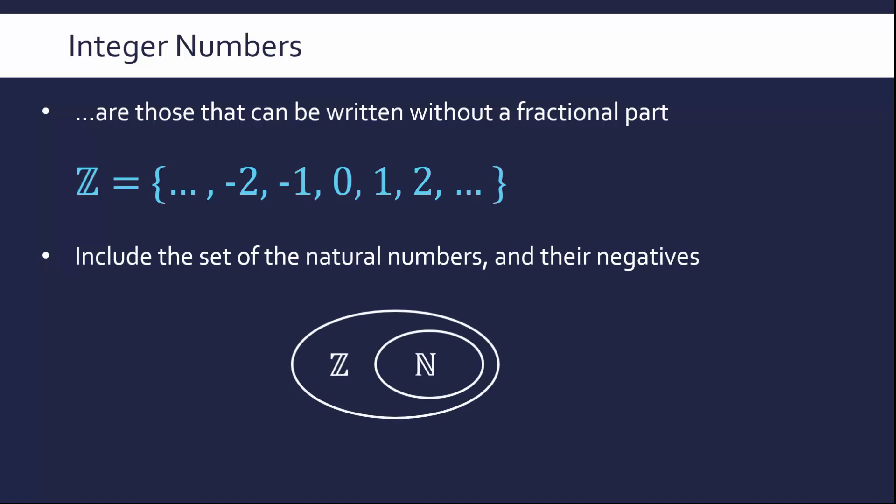If we want to represent it in a Venn diagram-ish representation, the integer numbers do encompass the natural numbers. Therefore, we can represent it with our proper subset notation, where we have this C looking symbol which says every natural number is within the set of the integer numbers, except we have a few extra integer numbers too, the negative ones essentially.